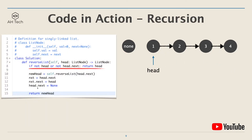Next, let's look at the recursion approach. For the recursion solution, we can use the given function as a DFS function. The most important thing is the base condition: if head is null or head.next is null, then we just return head immediately. We'll soon see why head.next is needed as part of the base condition. Using the same example with head pointing to node 1, we first keep recursing on head.next to reach the end.